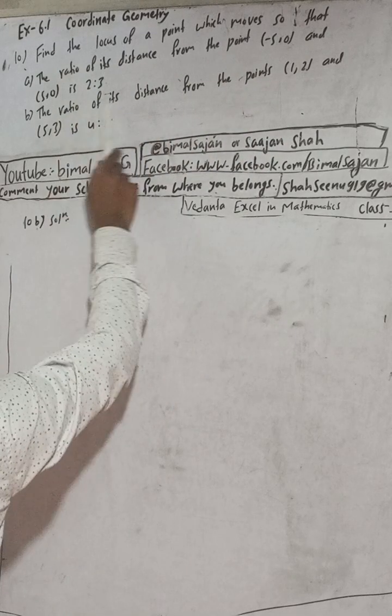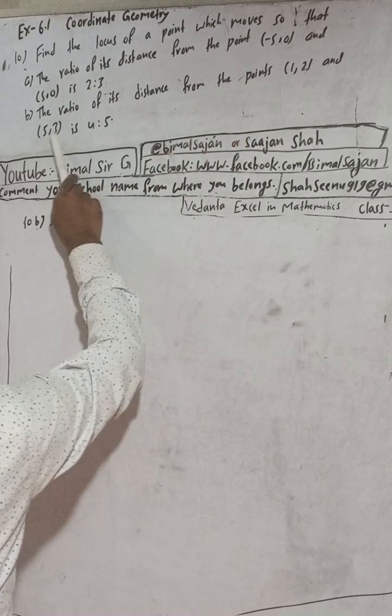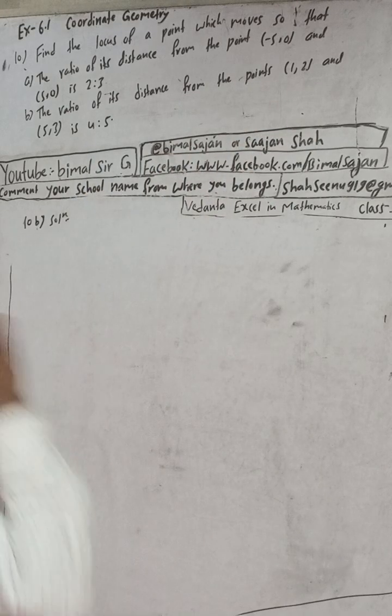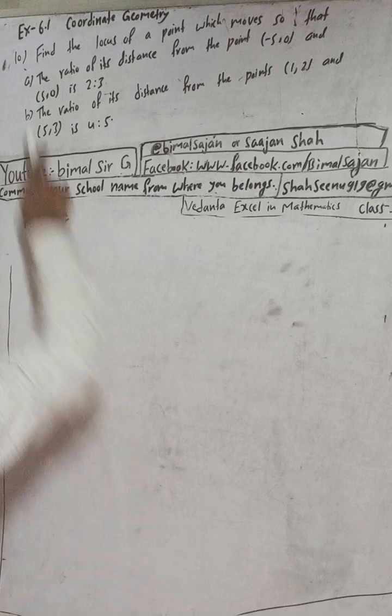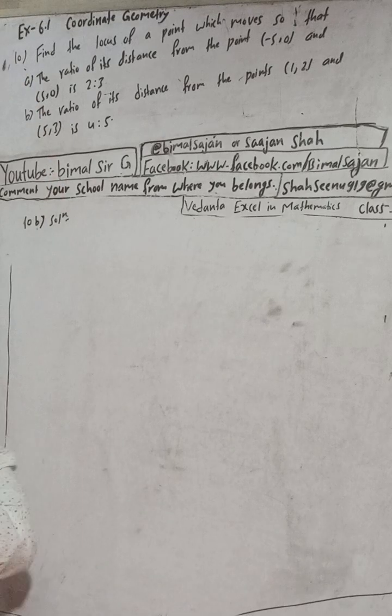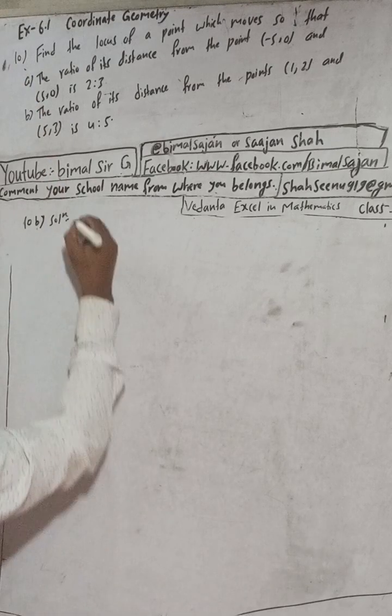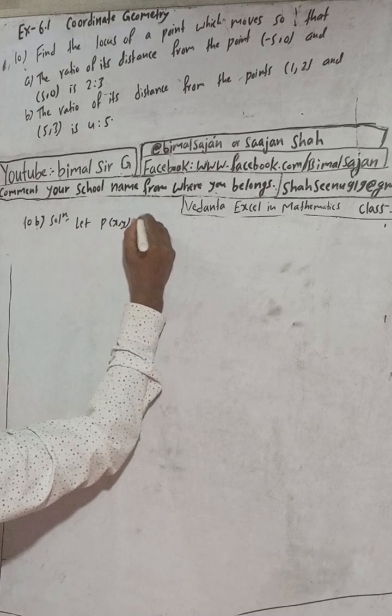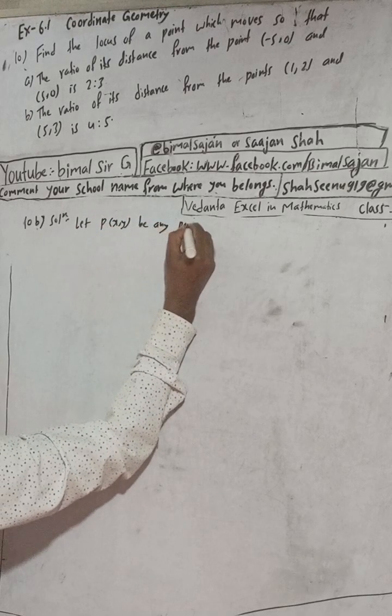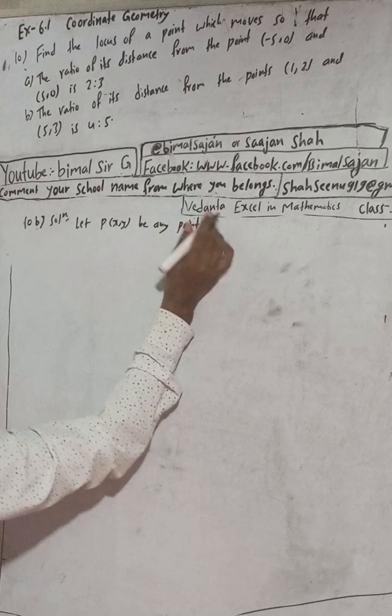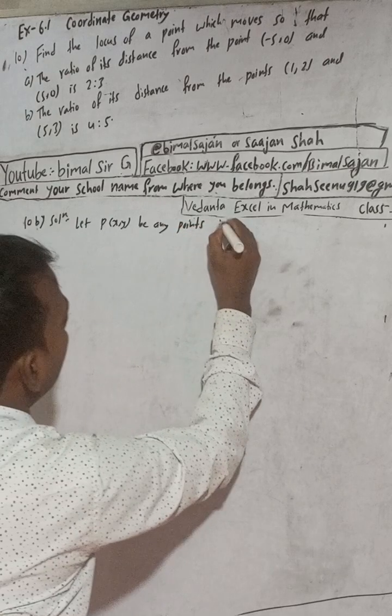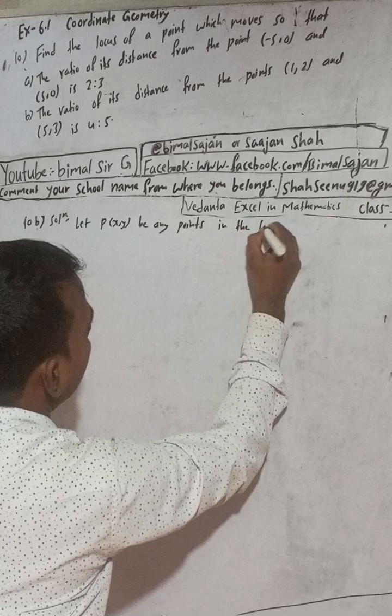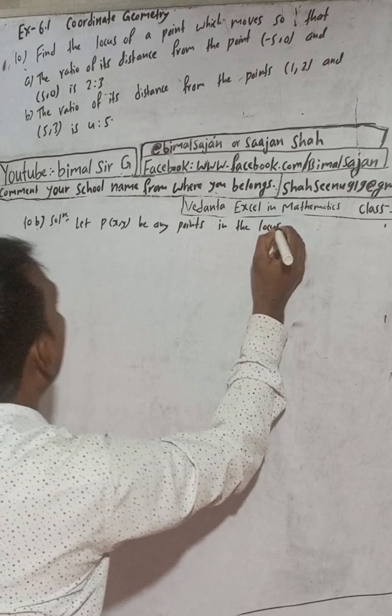Let P(x,y) be any point in the locus, and let A(1,2) and B(5,3) be two fixed points.